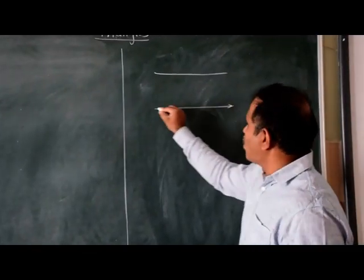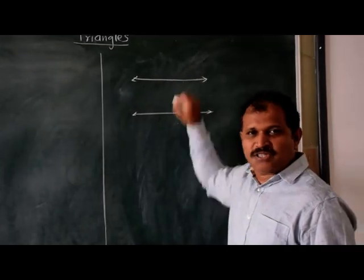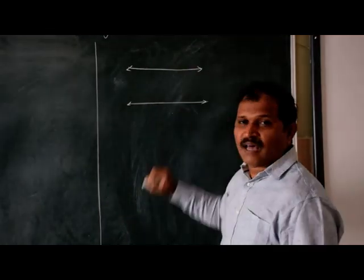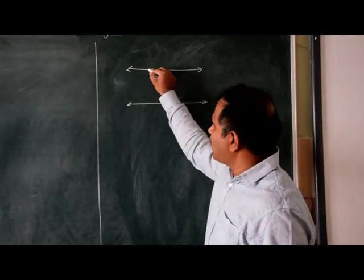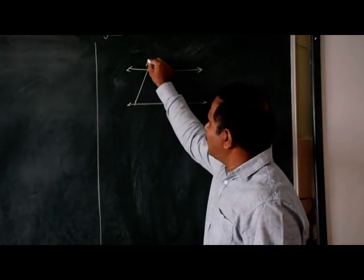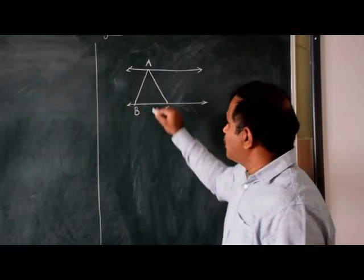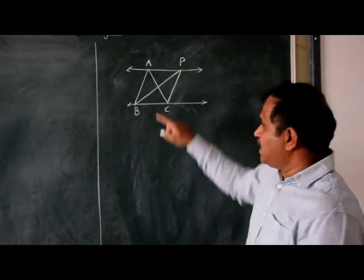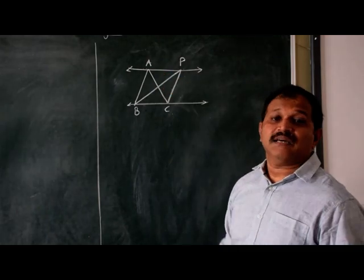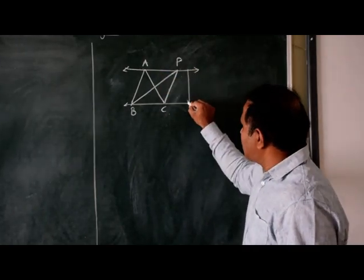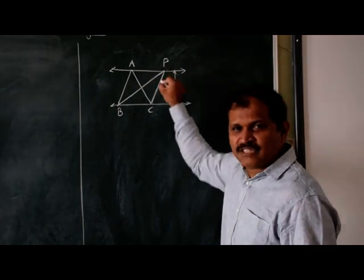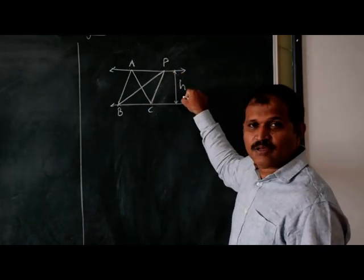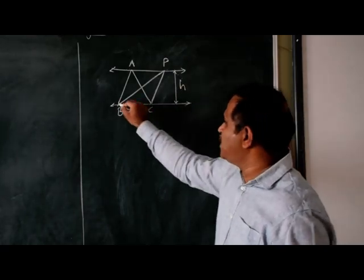If two lines drawn are parallel to each other, the distance between these two lines is always equal. So if two triangles, say triangle ABC and triangle PBC, are drawn between these two parallel lines, then their height will be the same — that is, height H is the same for both triangles, and BC is the common base.